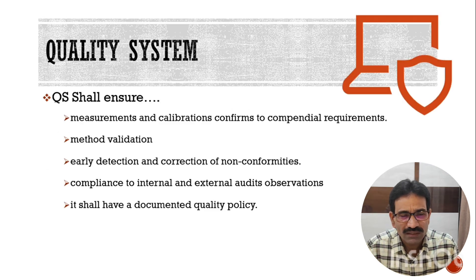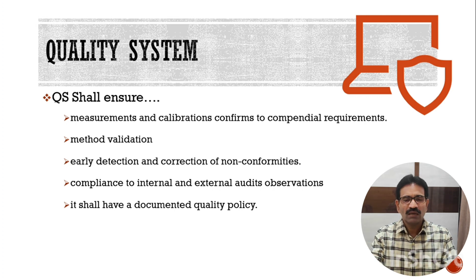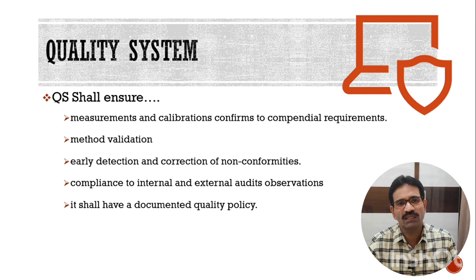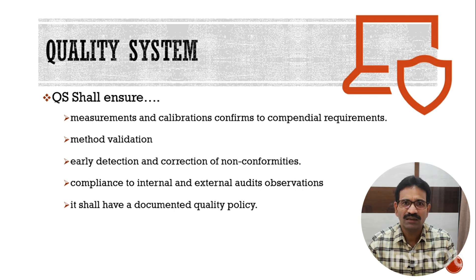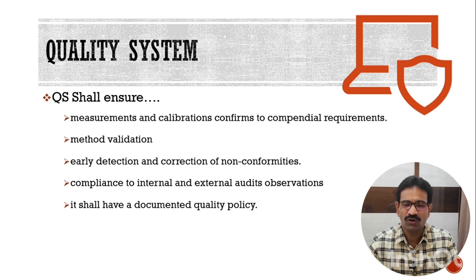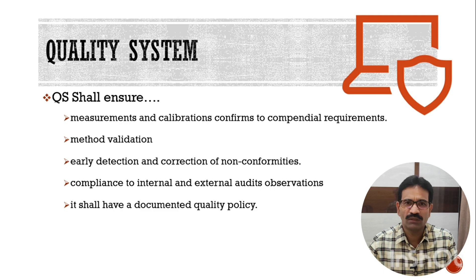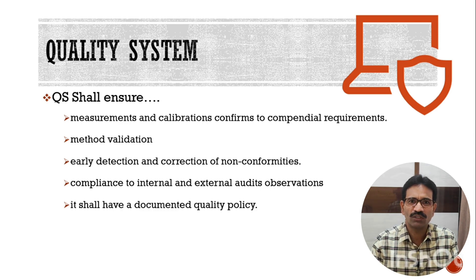Regarding the quality system, Schedule L1 expects that the quality system shall ensure measurement and calibrations conform to the compendial requirements. You have to validate a non-compendial method and verify the compendial method. You have to have a system for early detection and correction of non-compliances, and compliance with internal as well as external quality audits. Additionally, you have to have a quality policy that is displayed and all employees should be aware of it.